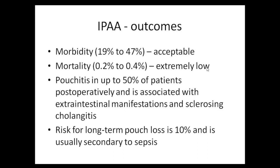Long-term risk of pouch loss is approximately 5 to 10 percent, usually due to anastomotic leak causing pelvic abscess and pelvic sepsis. The resulting extensive fibrotic reaction around the pouch prevents it from distending to the expected 300 mL capacity — leading to mechanical pouch failure with stricture formation and shrinkage. This is called pouch failure, requiring removal of the pouch and permanent end ileostomy.